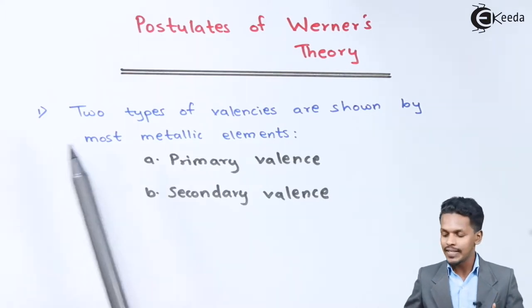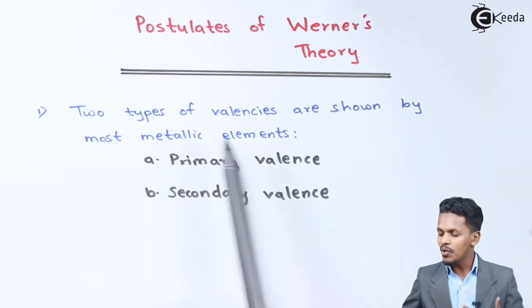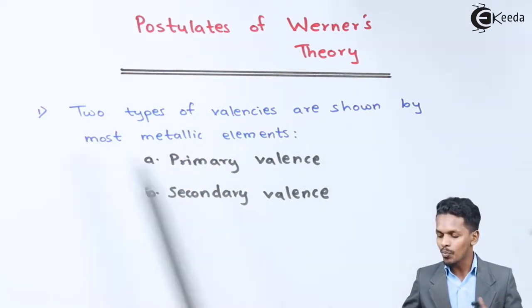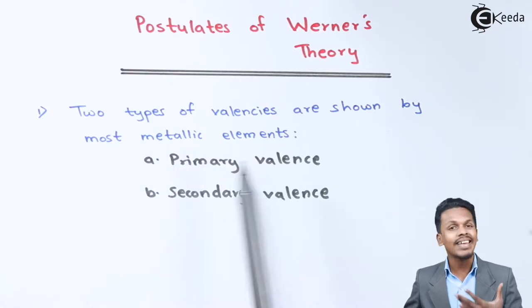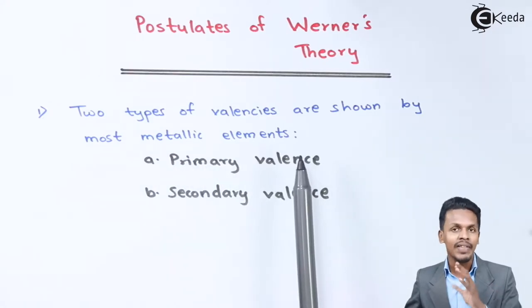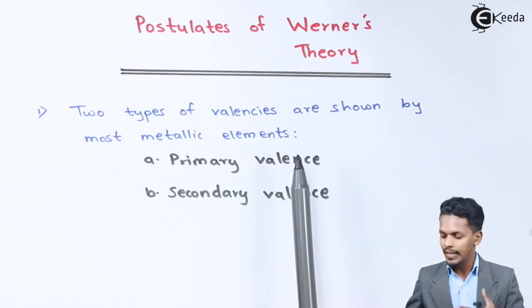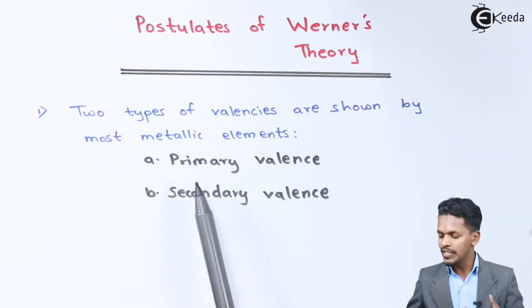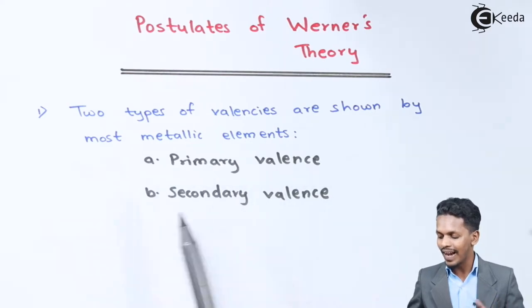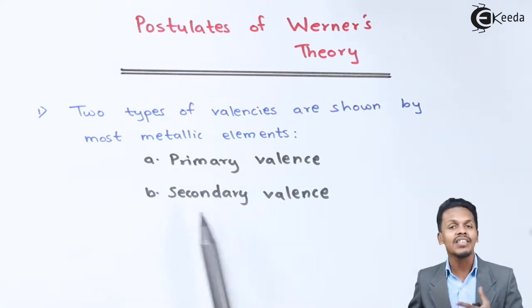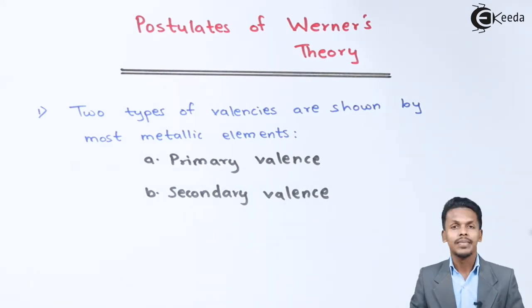Talking about the first postulate: two types of valencies are shown by most metallic elements whenever they exhibit a complex, that is a coordination compound. The first one is primary valence and the second one is secondary valence.